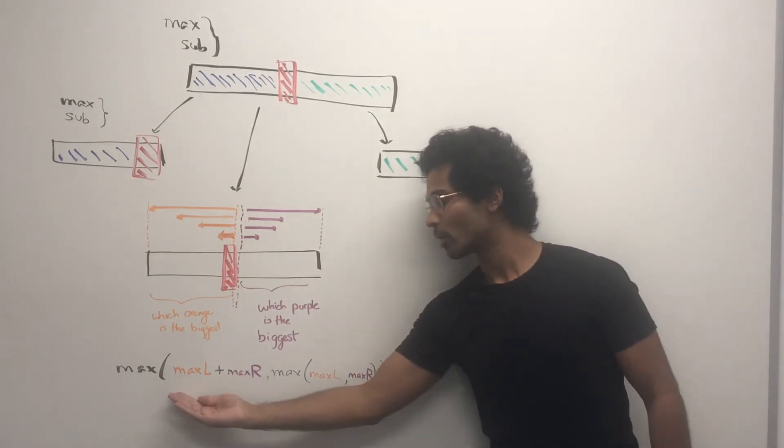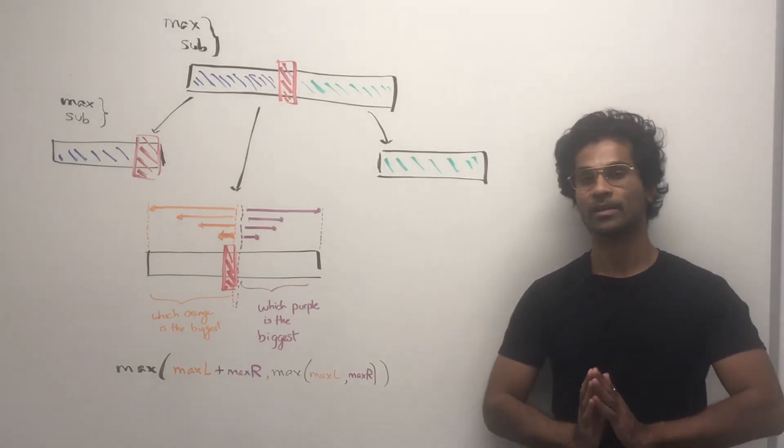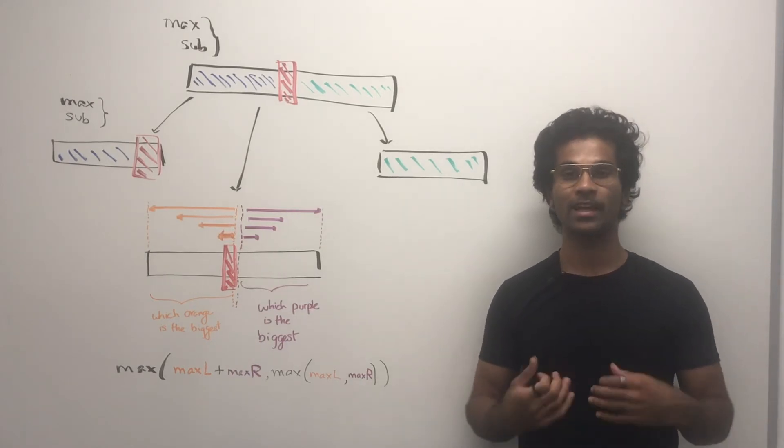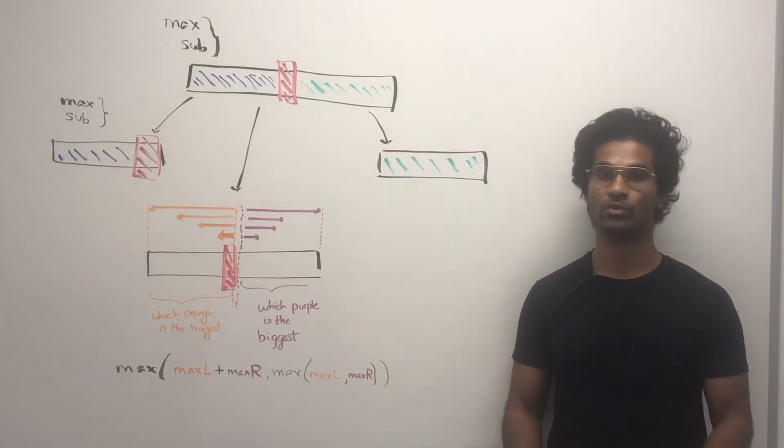So this is how we're going to iteratively calculate what is the maximum subarray, if we're going to definitely pass through the middle.